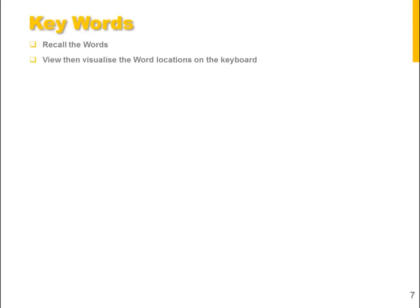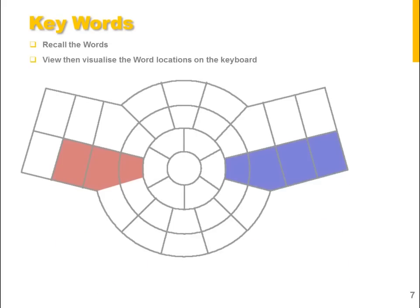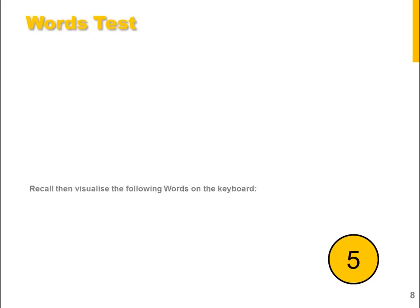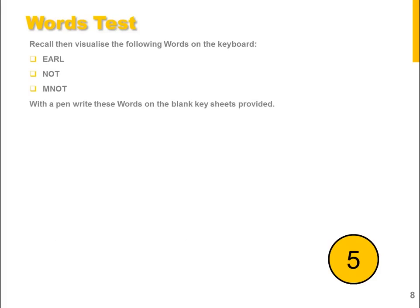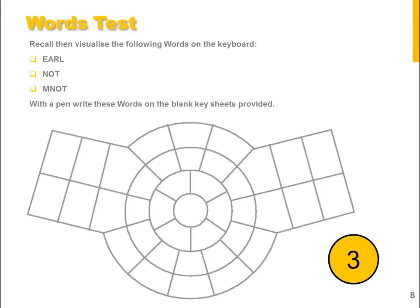Let's reinforce this again, looking at the keywords. Recall the words and visualize the locations. You can see here you have M to the left of the red area. The red area is 'not' and the blue area is 'Earl.' Now let's look at the words tip — recall these words on the keyboard: Earl, not, M, not. Now pause the video and see if you can fill in on the blank keyboard sheet where each of the words are located.